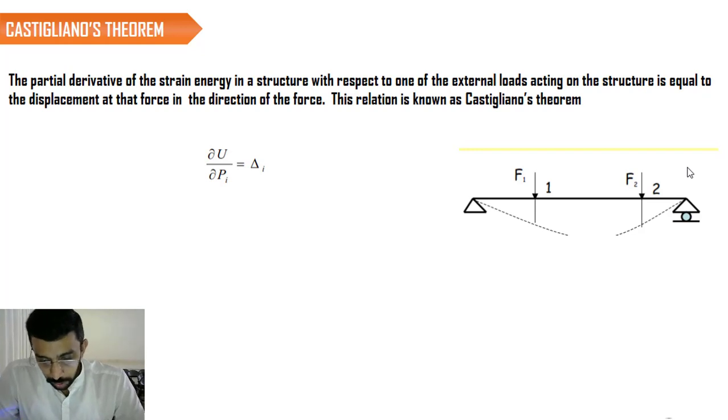If we apply a load F1 and F2 on a simply supported beam like this, which we have discussed in Maxwell's equation, we know how the deflection is going to happen. It is being denoted by the dotted line.